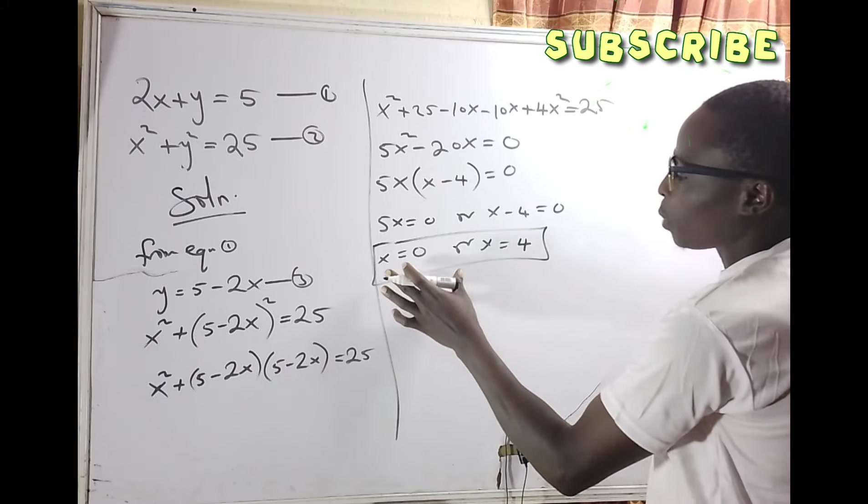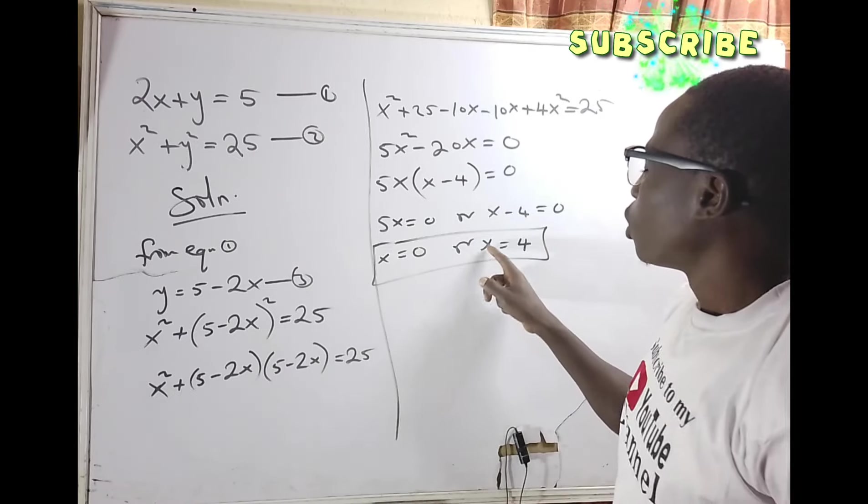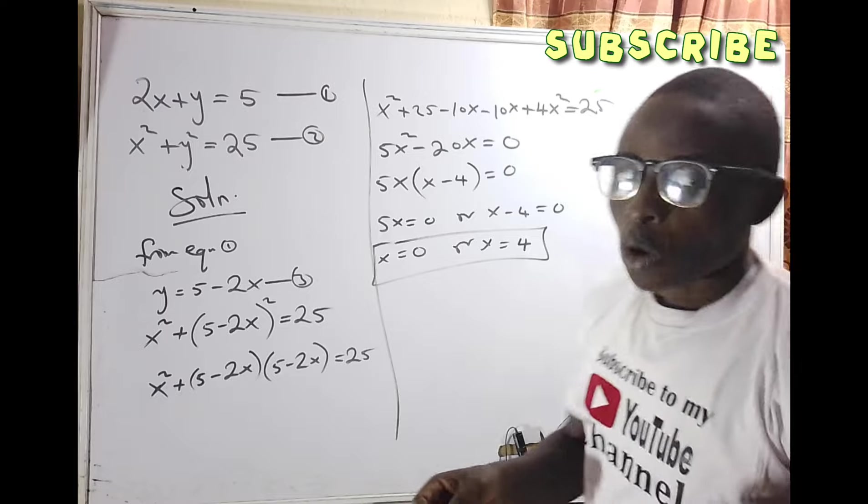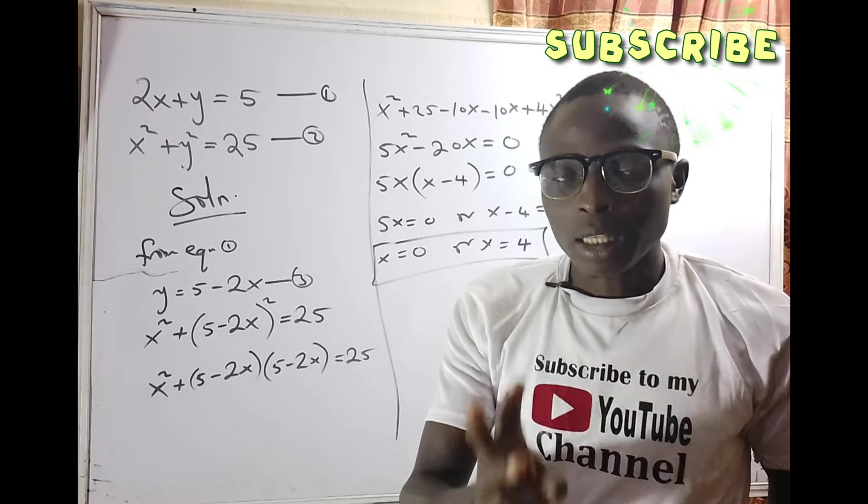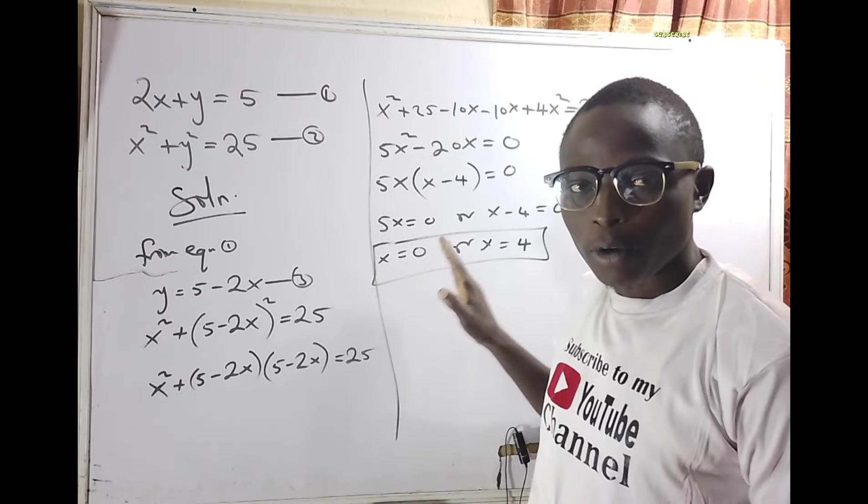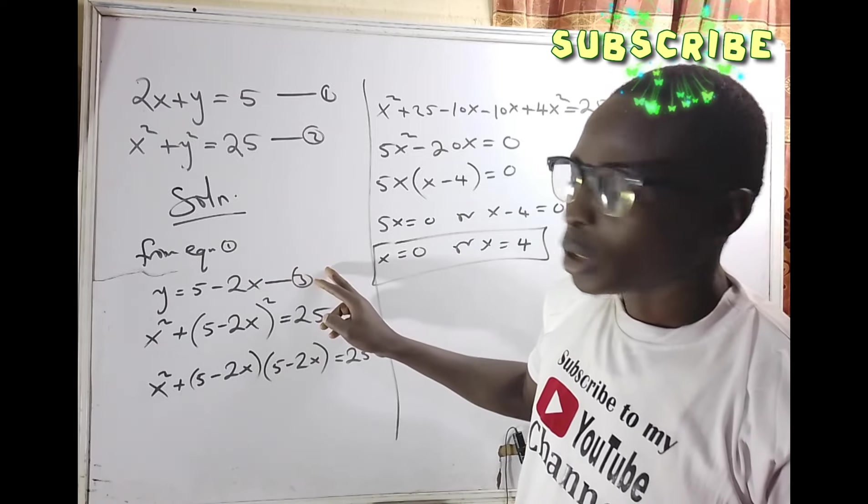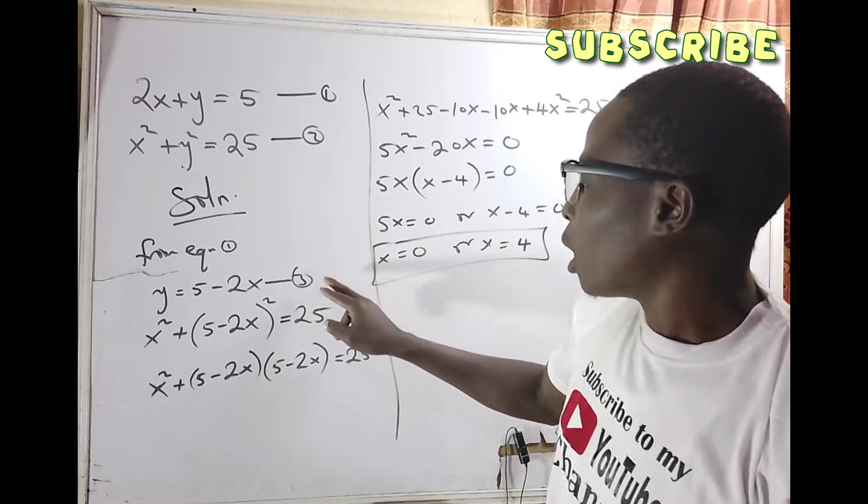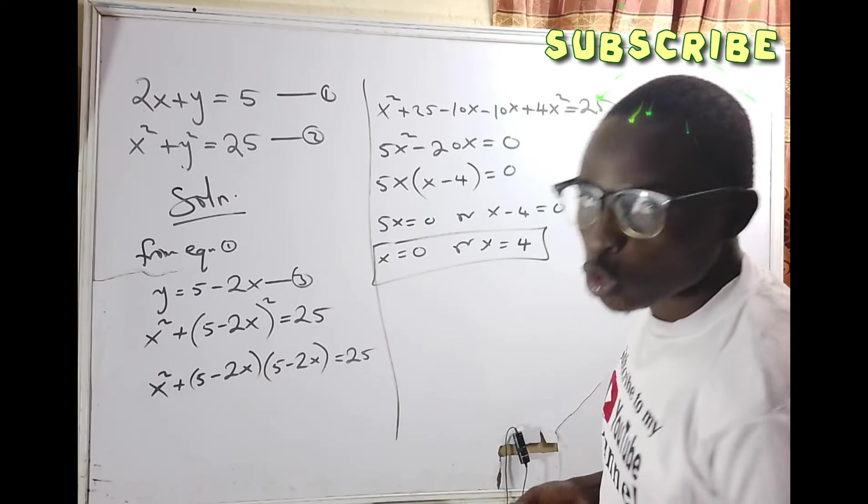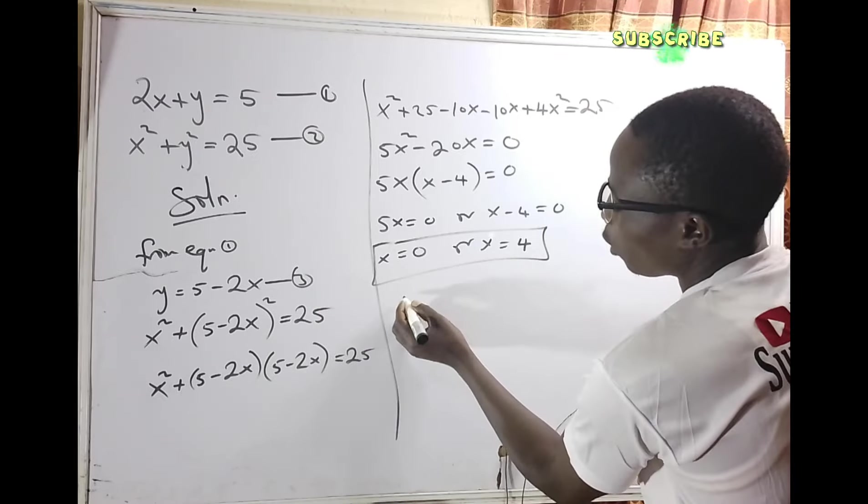These are the two possible values of x. We have two variables x and y. Now that we've gotten the values of x, let's come to equation 3 and substitute to get the values of y.